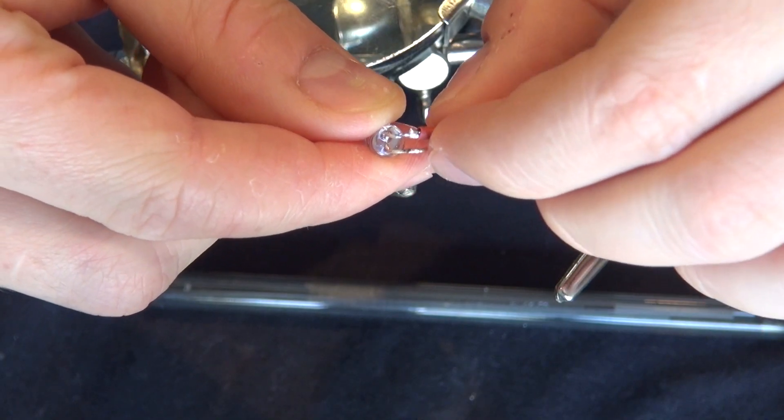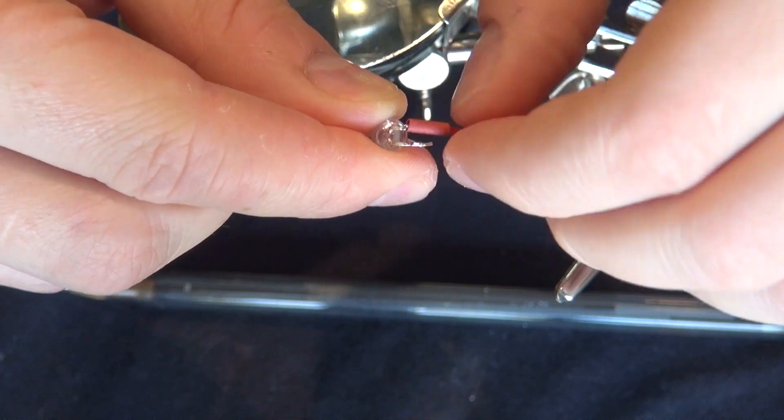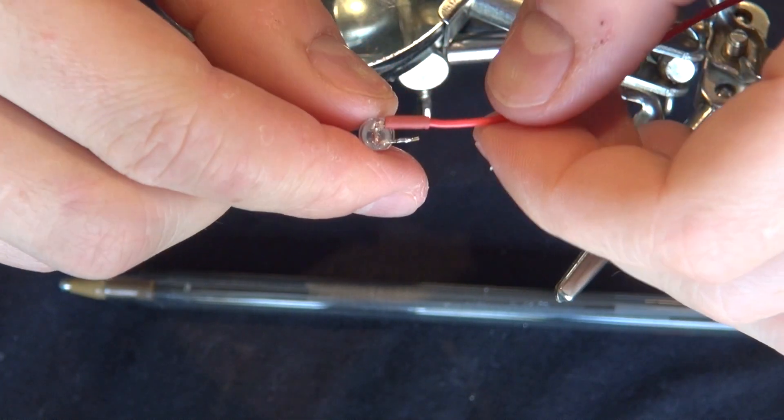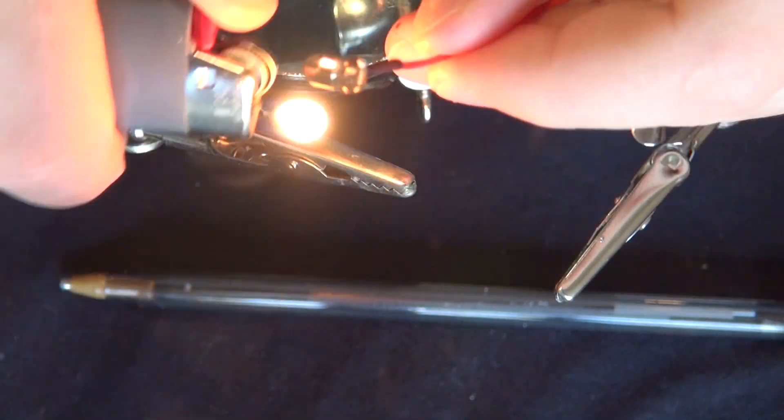Put a heat shrink tube on it to keep it insulated. There we go.